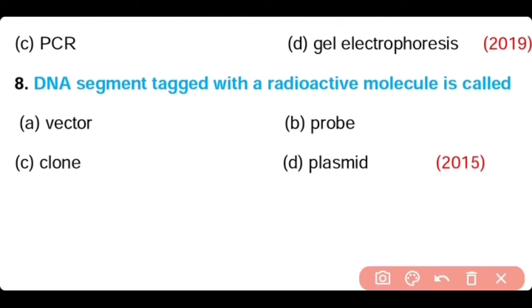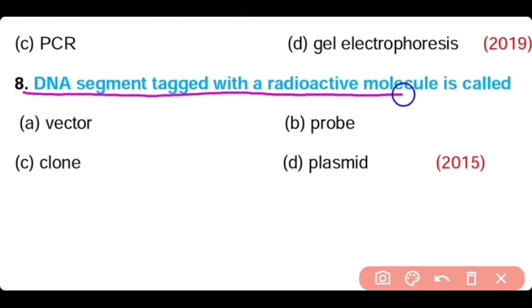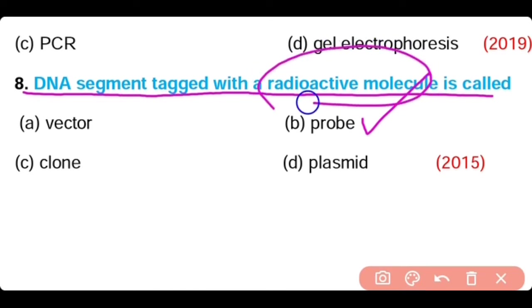Question 8: The DNA segment tagged with a radioactive molecule is called — vector, probe, clone, or plasmid? Option B is correct. A probe is a single-stranded DNA that is tagged with a radioactive molecule.